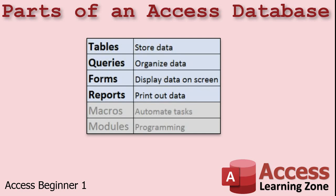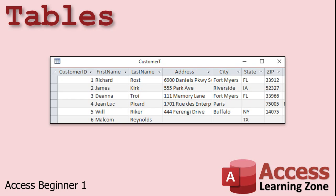I have macros and modules grayed out because you can build a fantastic database in Microsoft Access without ever using a macro or writing a line of code. I cover macros and VBA module programming in my developer level classes. But all you really need are tables, queries, forms, and reports. You can think of a table like a single Microsoft Excel spreadsheet, however tables give you much more control over the types of data that can be input into them.